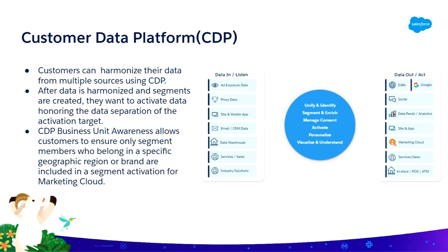When you start to activate that data back to activation platforms or source systems, there's some dissonance between how data was harmonized in CDP and what data is allowed to go back to any individual activation platform. Business unit awareness is specifically related to the integration between Marketing Cloud and CDP. It allows you to define a clear relationship between a contact identity in Marketing Cloud and a unified profile in CDP, ensuring only contacts belonging to that business unit get activated.